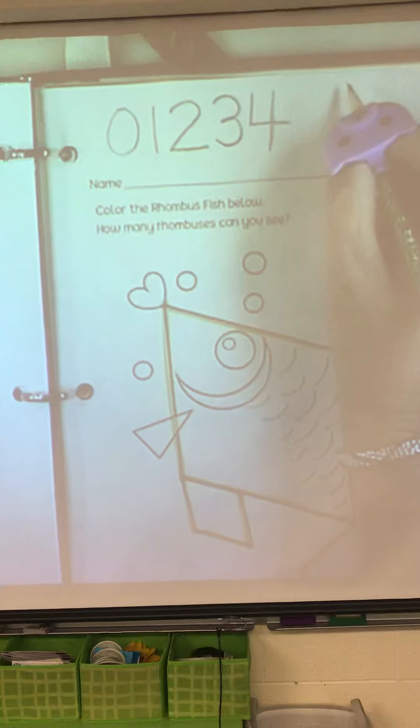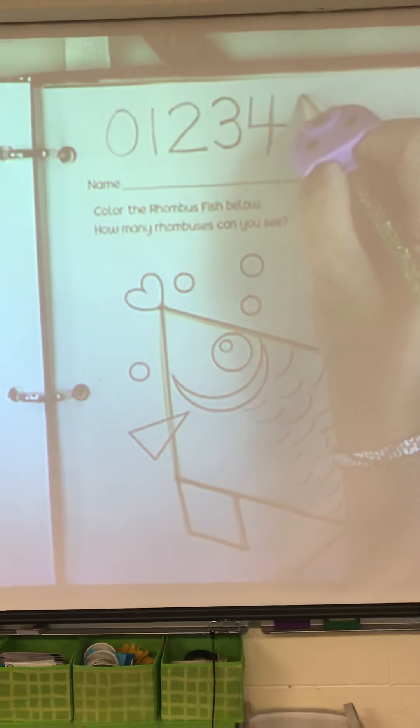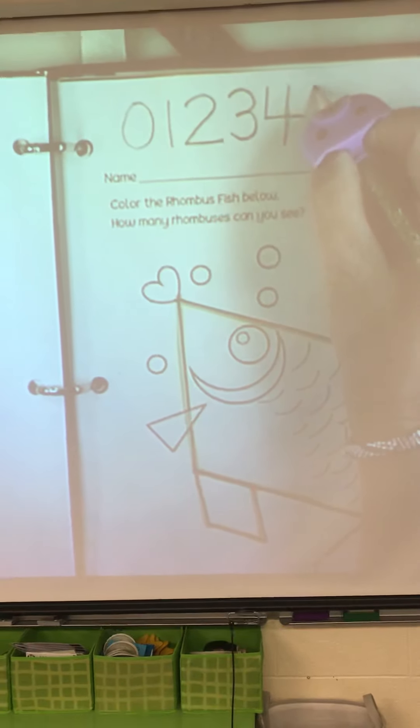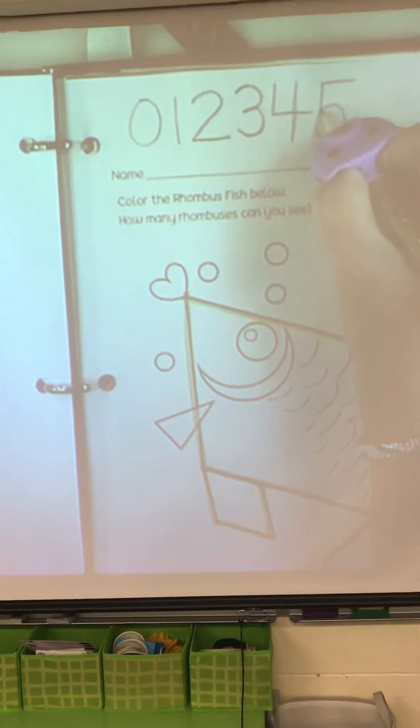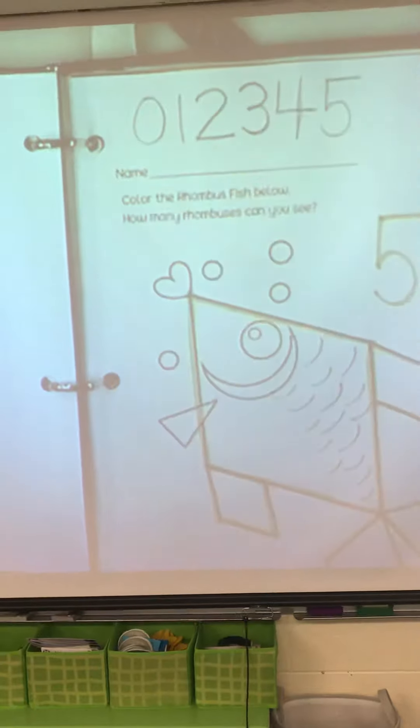We've reached five now, let's not stop. We've reached five now, let's not stop. Pull down, circle around, put a hat on top. Pull down, circle around, put a hat on top.